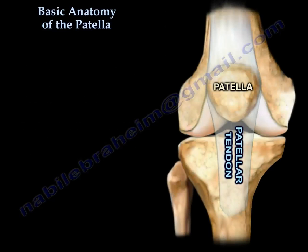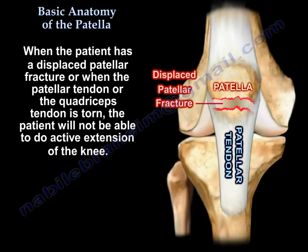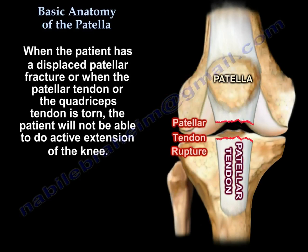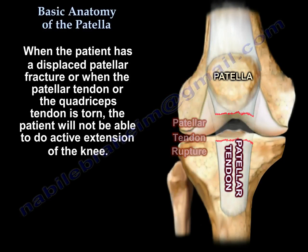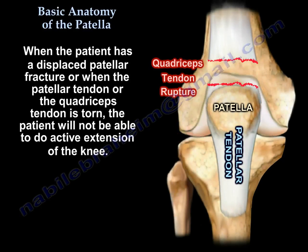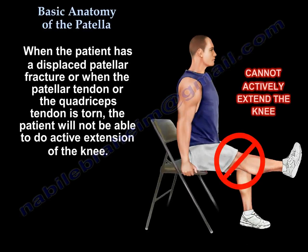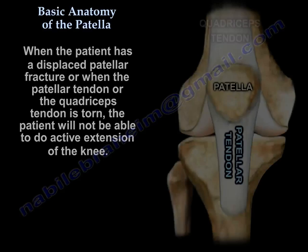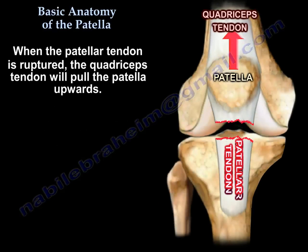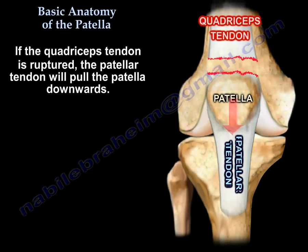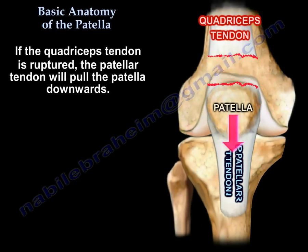When the patient has a displaced patellar fracture, or when the patellar tendon or the quadriceps tendon is torn, the patient will not be able to do active extension of the knee. If the patellar tendon is ruptured, the quadriceps will pull the patella upwards. If the quadriceps tendon is ruptured, the patellar tendon will pull the patella downward.